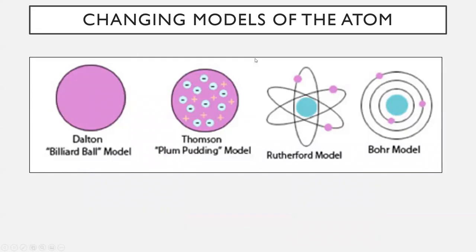We also talked about the changing models of the atom. There were four we were interested in. The Dalton model, called the billiard ball model, is where Dalton thought all atoms were just their own individual ball — a ball representing hydrogen, another for iron, each element with its own unique ball. The second was Thompson's plum pudding model, or raisin bun model. Thompson believed most of an atom was positively charged, but that there must be little negatively charged pieces — electrons — inside of it. So atoms have both a positive and a negative electrical piece.